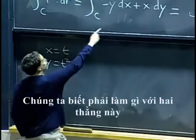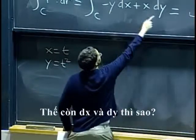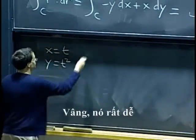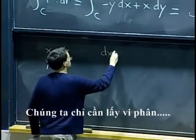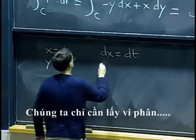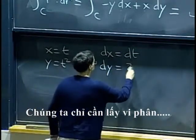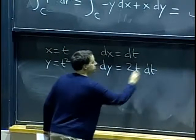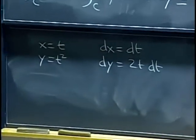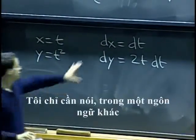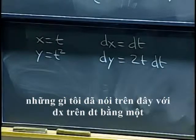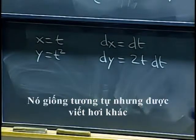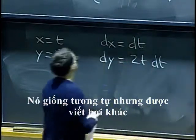So we know what to do with these two guys. What about dx and dy? Well, it is easy. We just differentiate: dx becomes dt, dy becomes 2t dt. I am just saying in a different language what I said over there with dx/dt equals 1, dy/dt equals 2t. It is the same thing, but written slightly differently.